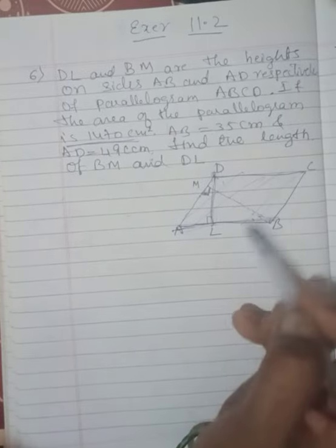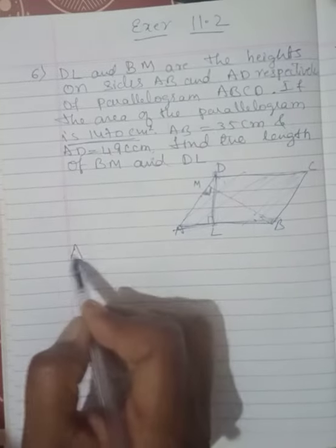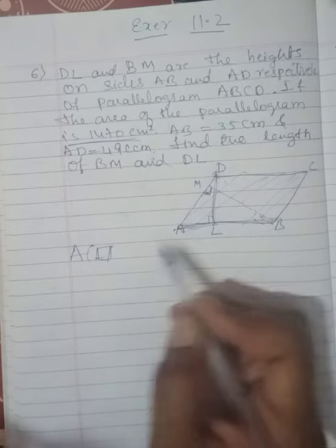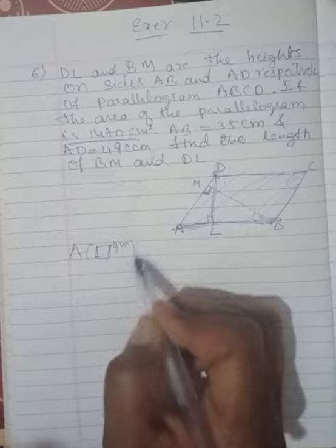If the area of parallelogram is 1470... see, the full area means this full one. Area of parallelogram you are given. Whether you take this base and height or this base and height, you will get the same area. This you have to keep in mind.